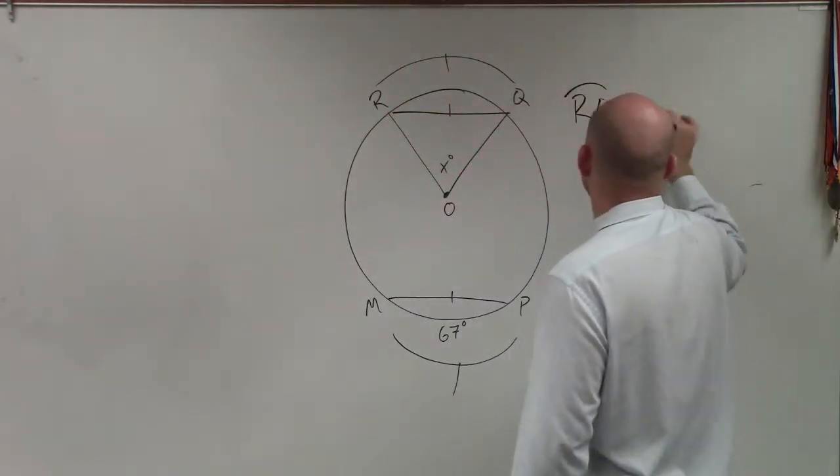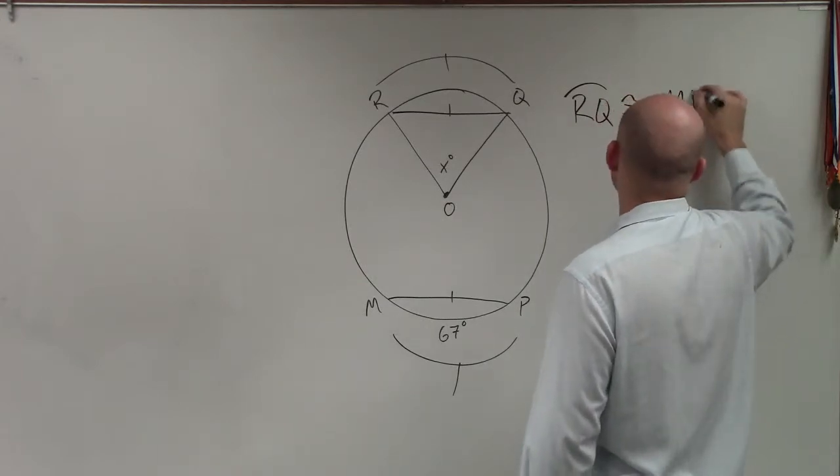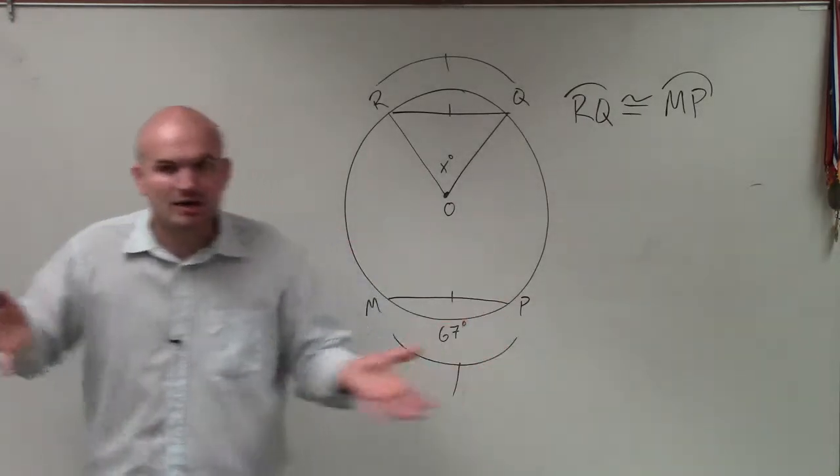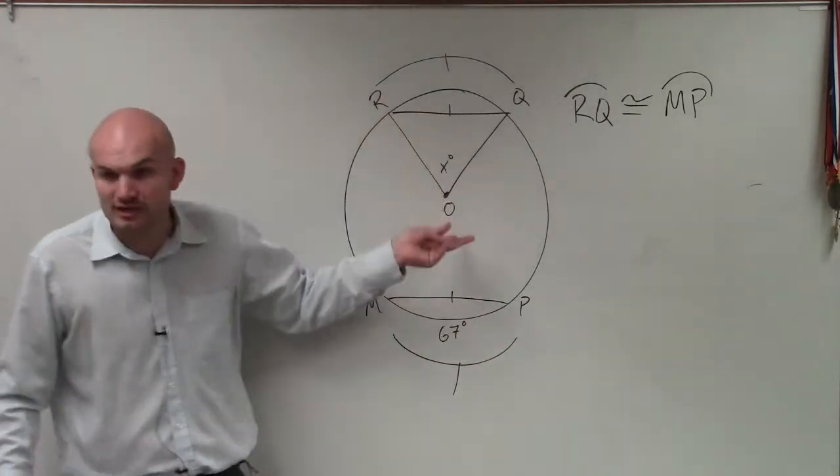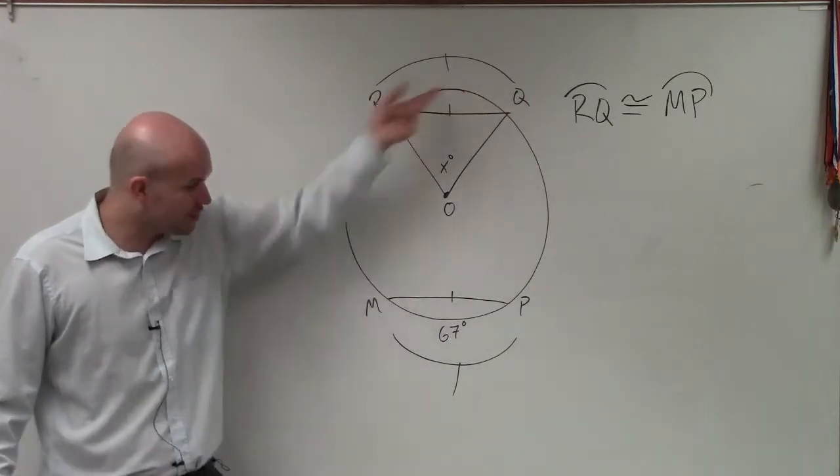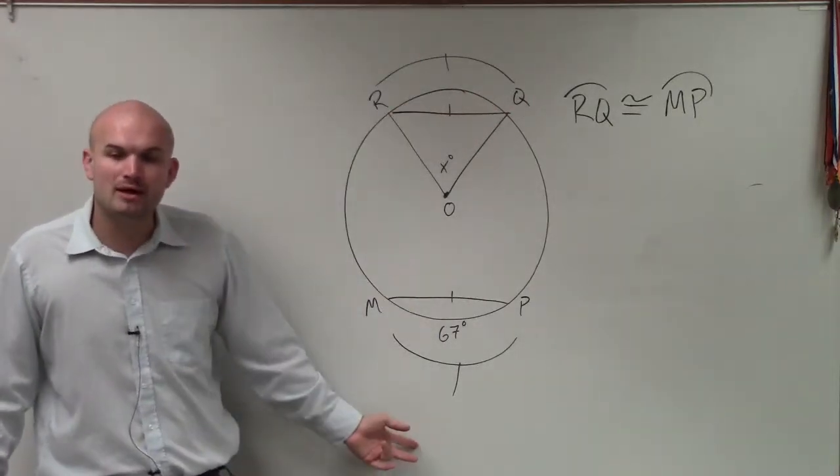RQ is congruent to MP. That's in your notes. That was the whole process. The major thing is when you have chords that are congruent, a chord, just a line that touches a circle with two endpoints. When those are congruent, your arcs are the same.